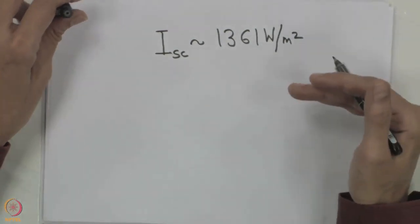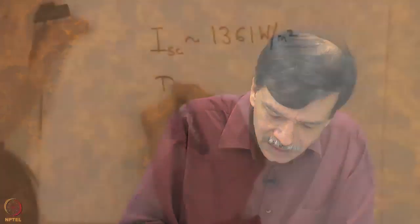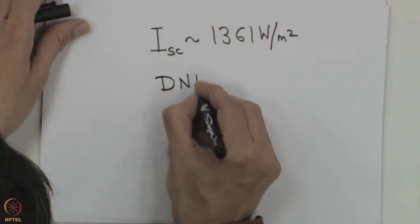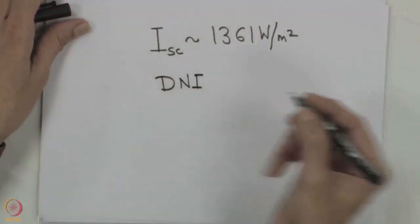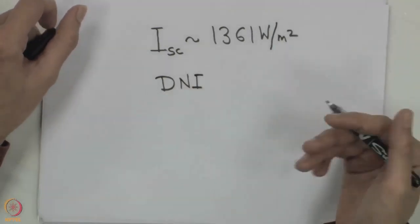When it comes through the atmosphere, some of it gets scattered, some comes down as diffuse, and some gets absorbed. What we have is what is known as the Direct Normal Irradiance (DNI). When talking about solar photovoltaics, we usually have a standard based on 1000 watts per meter squared and we create the characteristics for that insolation. When the insolation is lower, the output would be lower.